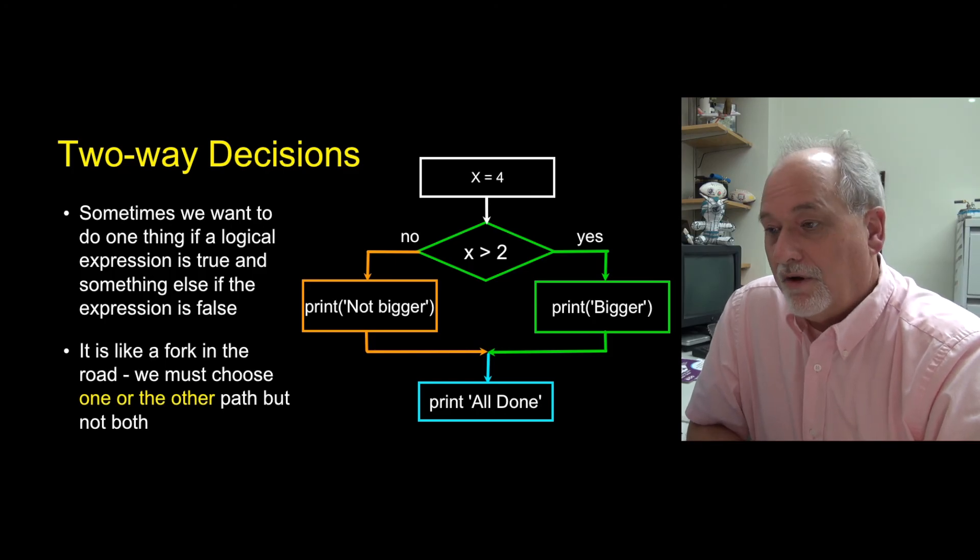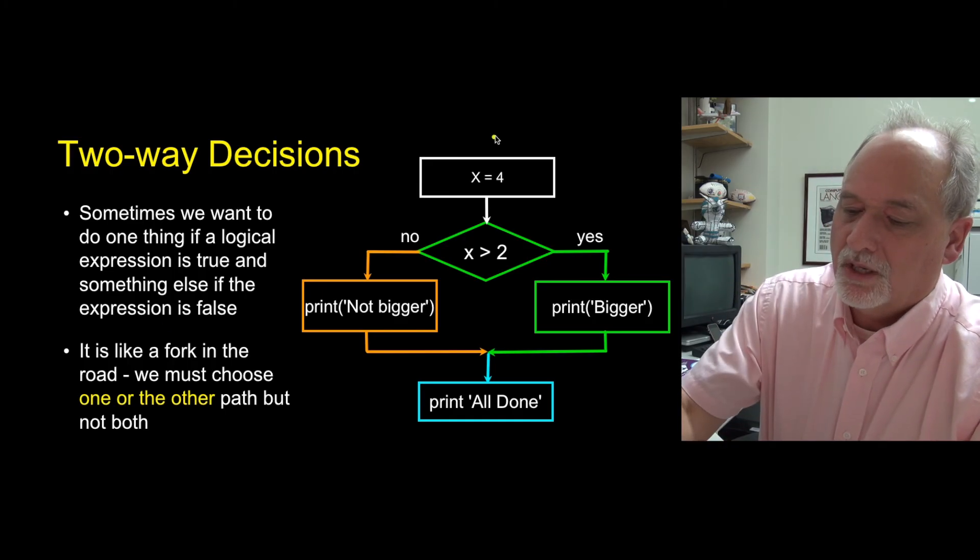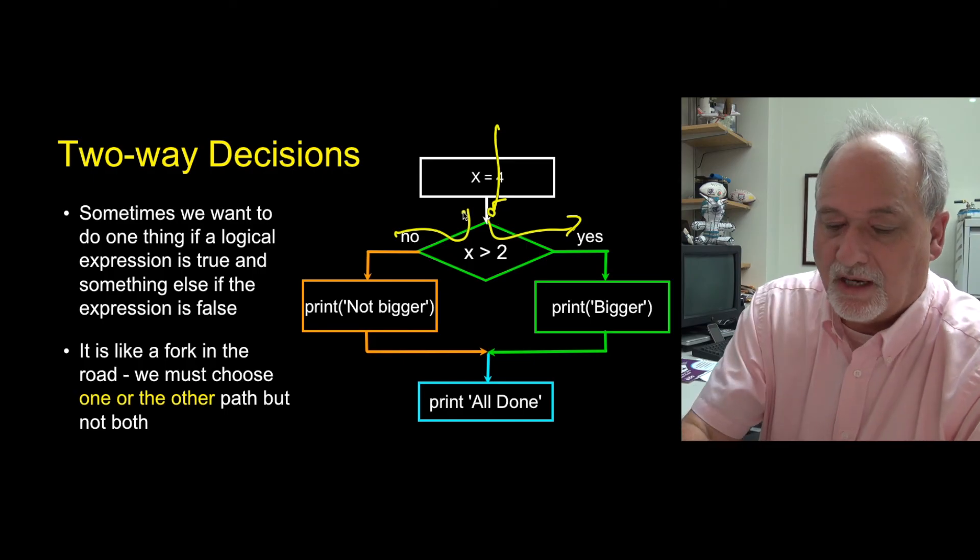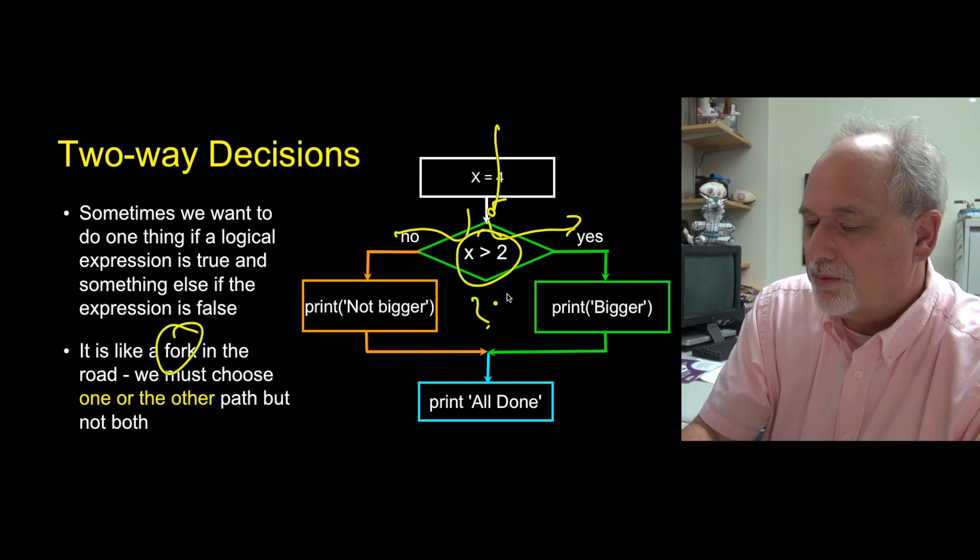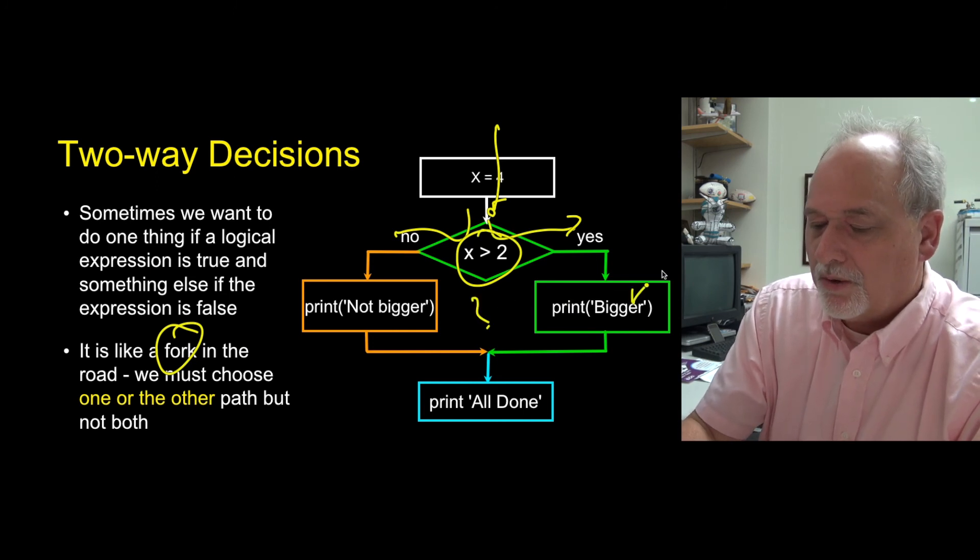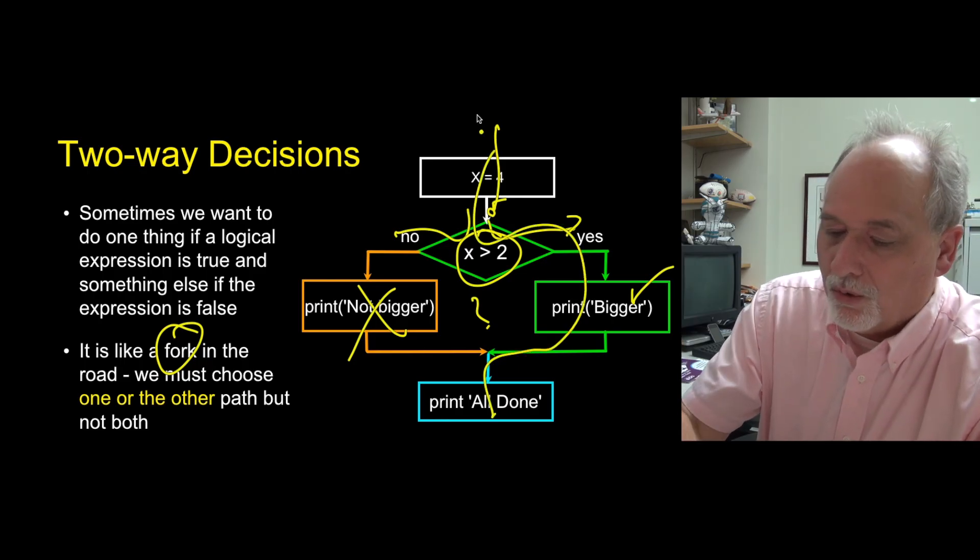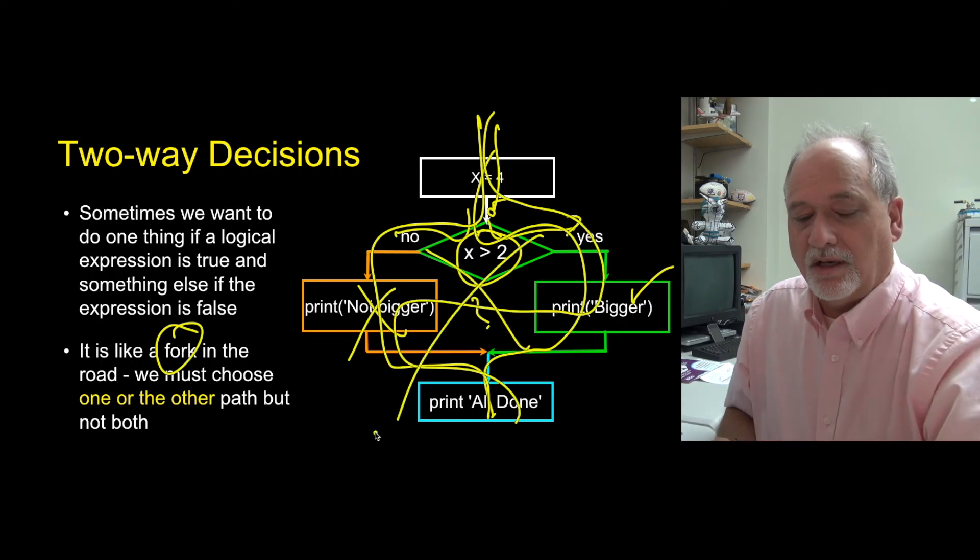So one form is a one branch if that we just saw, but then you can also have what's called a two branch if. The basic idea of a two branch if is that you're going to come in, ask a question, and you're going to go one direction if it's yes and another direction if it's no. We call this an if-then-else, it's kind of like a fork in the road. Depending on the output of this question we're going to pick one of these two, but if we pick one the other one's never going to happen.